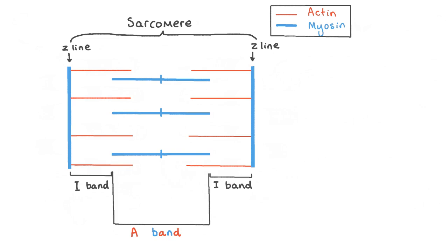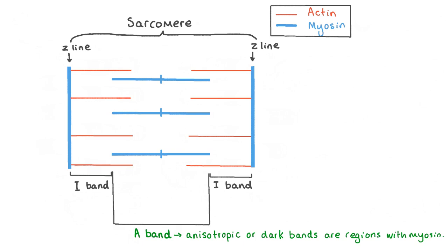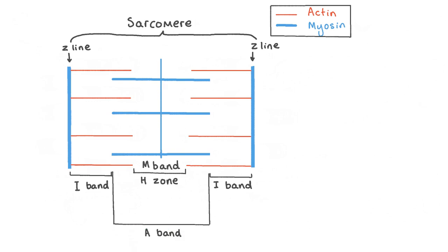The A band is also known as the anisotropic band, which means it's optically opaque because it contains both types of filaments and the bulky globular heads of myosin. As the A bands contain these thicker myosin filaments, they appear considerably darker in micrograph images, which is why they're sometimes called the dark bands. The outer edges of the A band are darkest as these are the regions where actin and myosin overlap. The inner edges of the A band called the H zone are not quite so dark as they only contain myosin filaments. The middle of the H zone is called the M band — remember M for middle. To tell the H band from the I band: the letter H is wider than the letter I, so the H band is made of the thick myosin filaments while the I band is made of the thin actin filaments only.